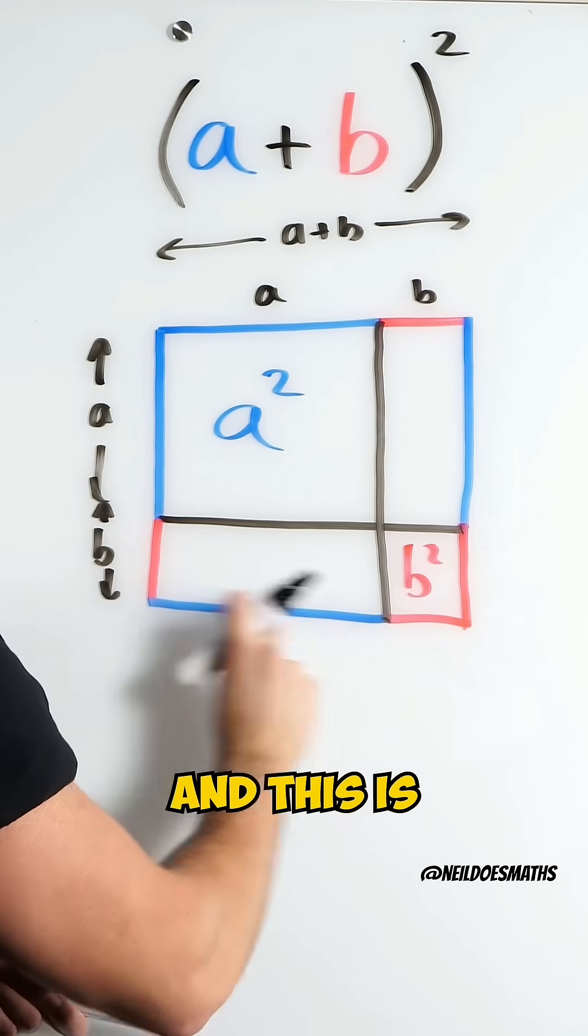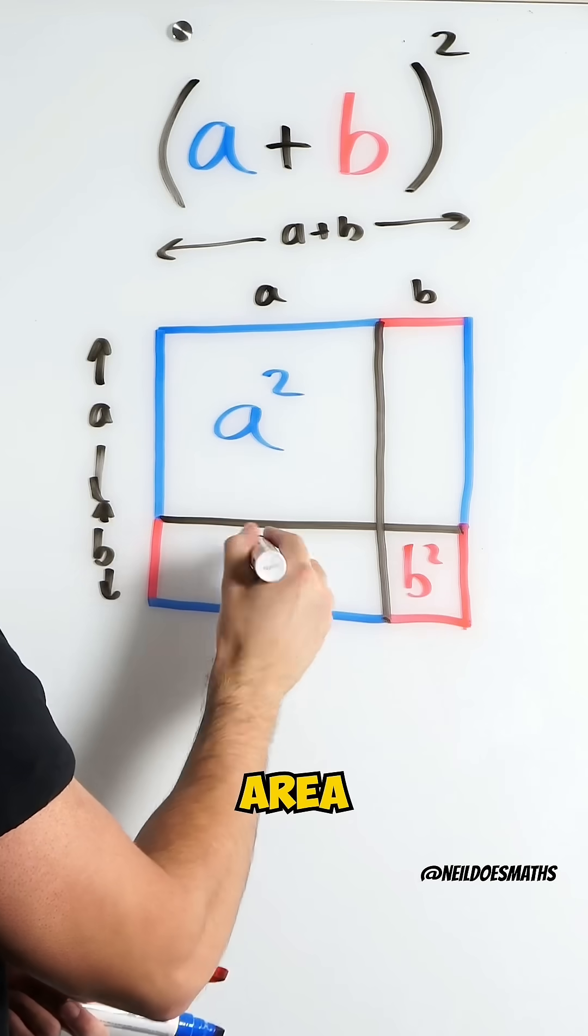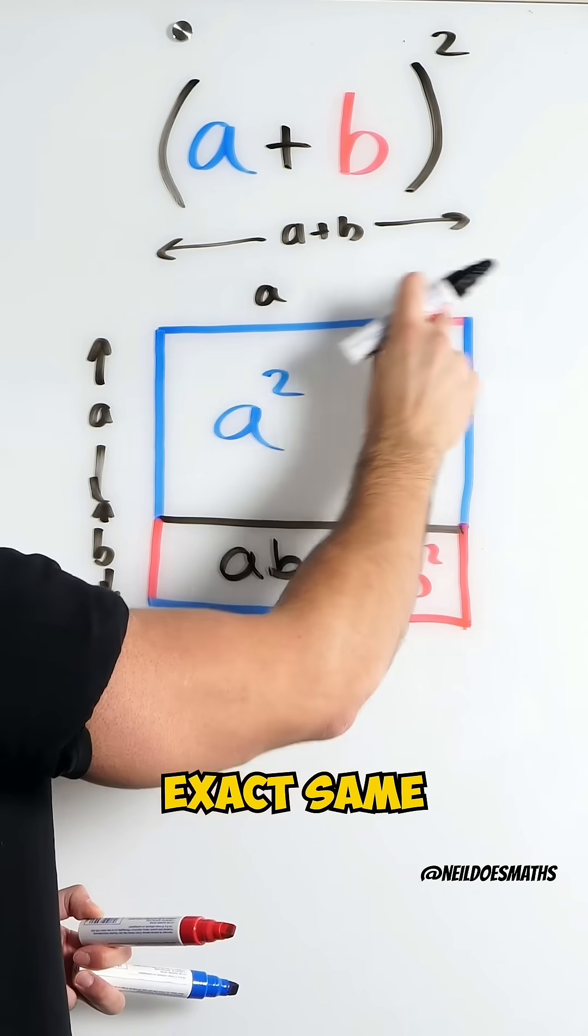Well, this length is B and this is A. So, this area is A, B and this is the exact same B, A.